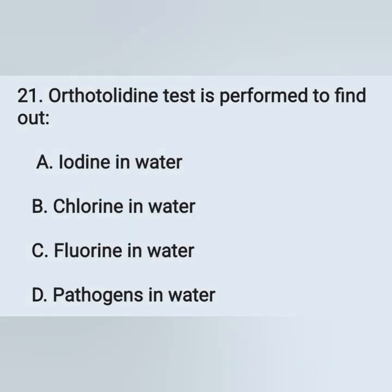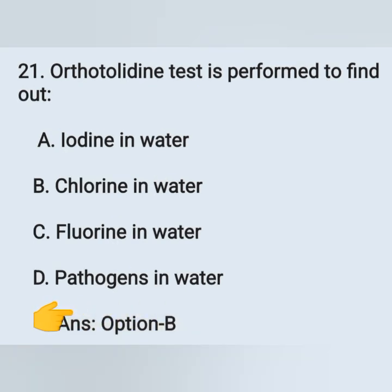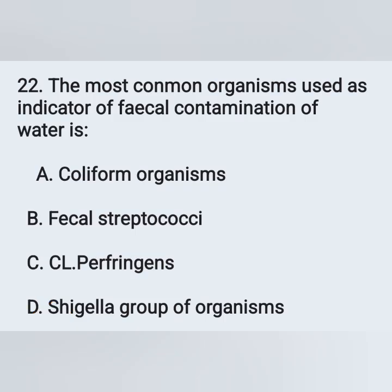21st question: ortho-tolidine test is performed to find out — option A: iodine in water, option B: chlorine in water, option C: fluorine in water, option D: pathogens in water. The ortho-tolidine test is performed to find out chlorine in water — option B is the correct answer.